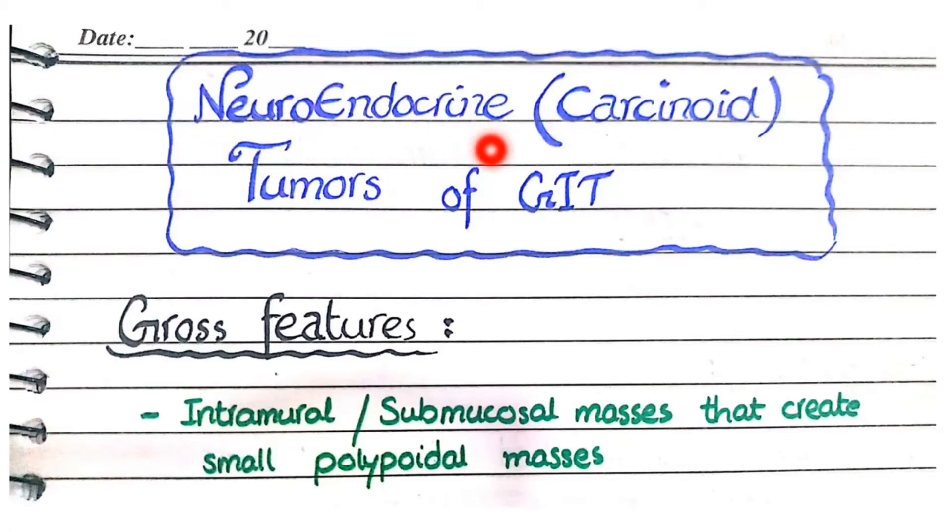In this video, we will study the pathology of neuroendocrine tumors of the GIT, also known as carcinoid tumors. Grossly, they appear as intramural or submucosal masses that create small polypoidal masses.